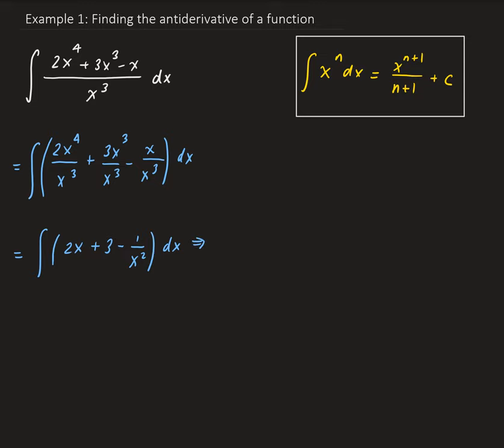Now we can use one of the properties of the integral—we can distribute the integral to each of these terms. So we have the integral of 2x dx plus the integral of 3 dx, and we can take the minus out as a constant, leaving us with minus the integral of 1 over x squared dx.